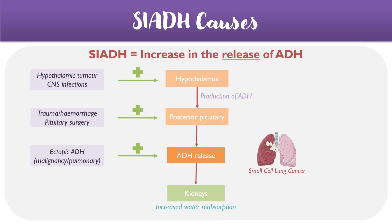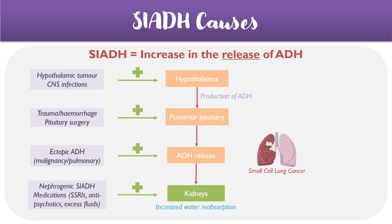Finally, there could be problems with the kidneys themselves, such as nephrogenic SIADH, where there is a difference in the aquaporin-2 channels or a mutation which results in them not functioning properly. Or there could be medications, such as antidepressants, antipsychotics, or excessive IV fluid administration.